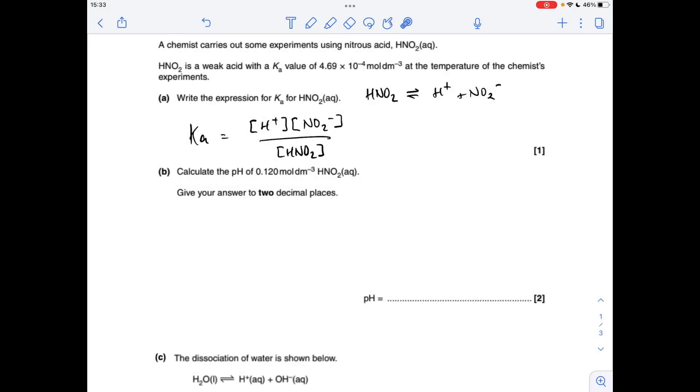Part A, we've got to write the expression for Ka for this weak acid. So I've got the dissociation there for the weak acid, and obviously Ka is the equilibrium concentration of the products multiplied together, divided by the reactant. And like with a few of these we've seen now, you can't do the abbreviated version, so you can't do the concentration of H plus squared over the concentration of the acid. It has to be the full formulae.